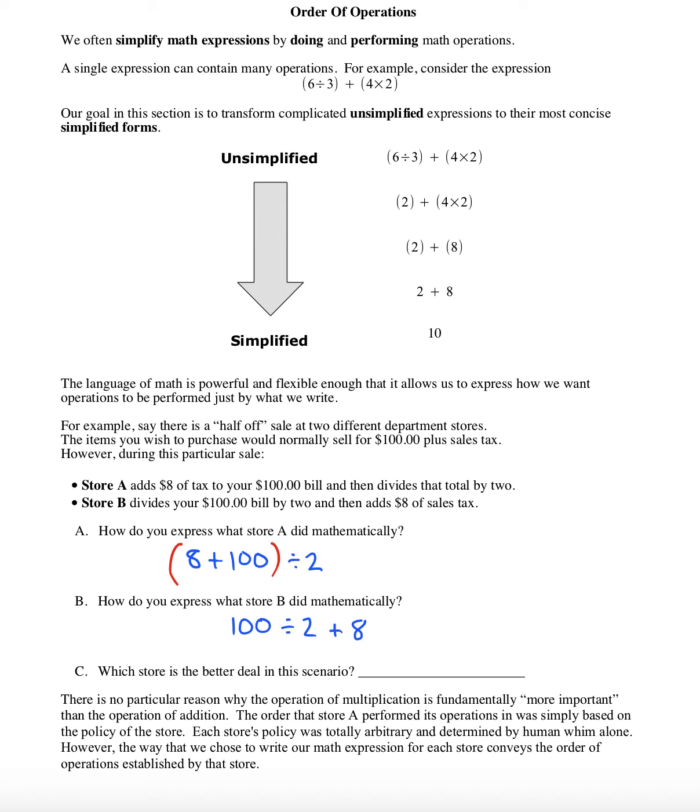Which store is the better deal? Let's go ahead and perform these operations. Now that the parentheses are around the $8 and the $100, we add them first. So we'll get $108, and now we can divide by $2, which gives us $54.